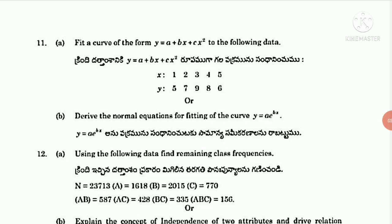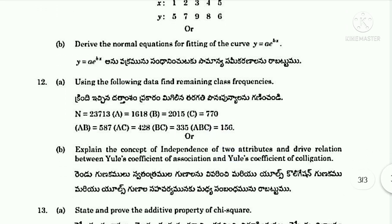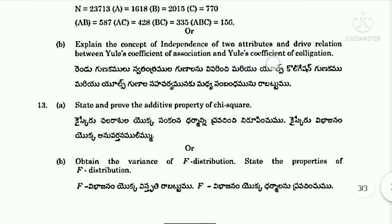Eleventh A: Fit a curve of the form y = a + bx + cx² to the following data. Or Eleventh B: Derive the normal equations for fitting of the curve y = ae^(bx). Twelfth A: Using the following data, find remaining class frequencies. Or Twelfth B: Explain the concept of independence of two attributes and derive the relation between Yule's coefficient of association and Yule's coefficient of colligation. Thirteenth A: State and prove the additive property of chi-square. Or Thirteenth B: Obtain the variance of the F-distribution and state the properties of the F-distribution.